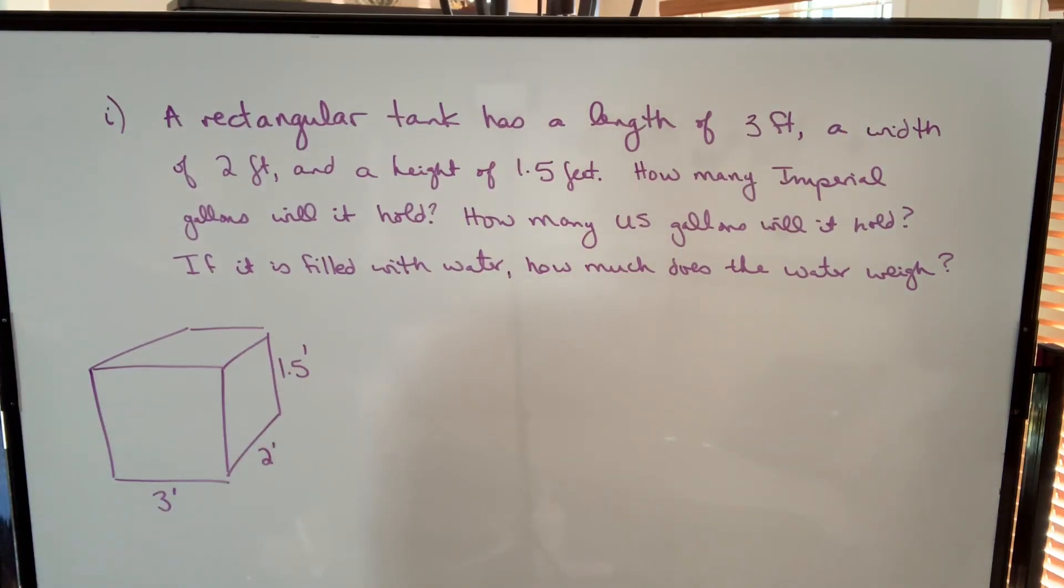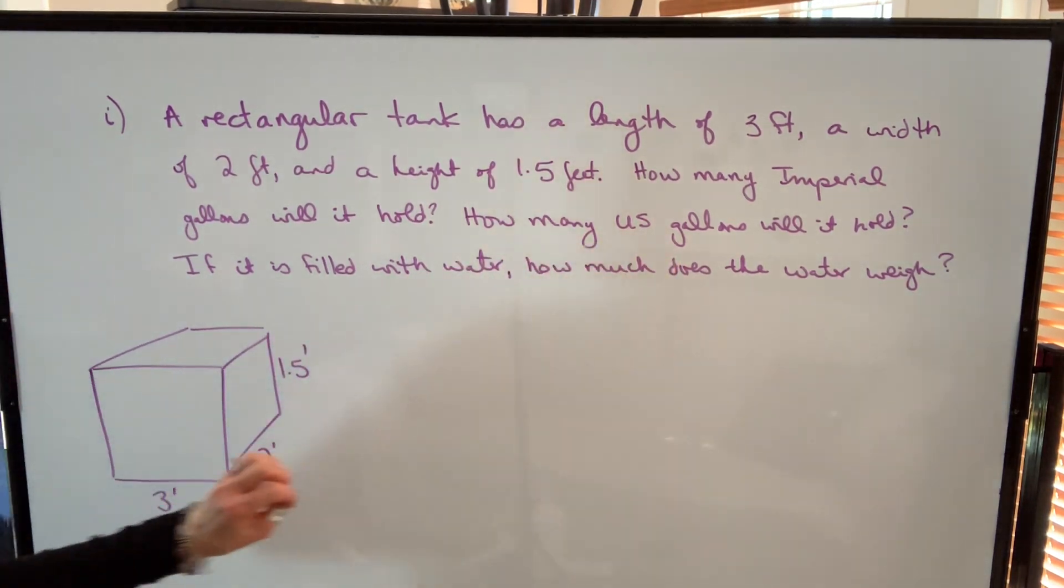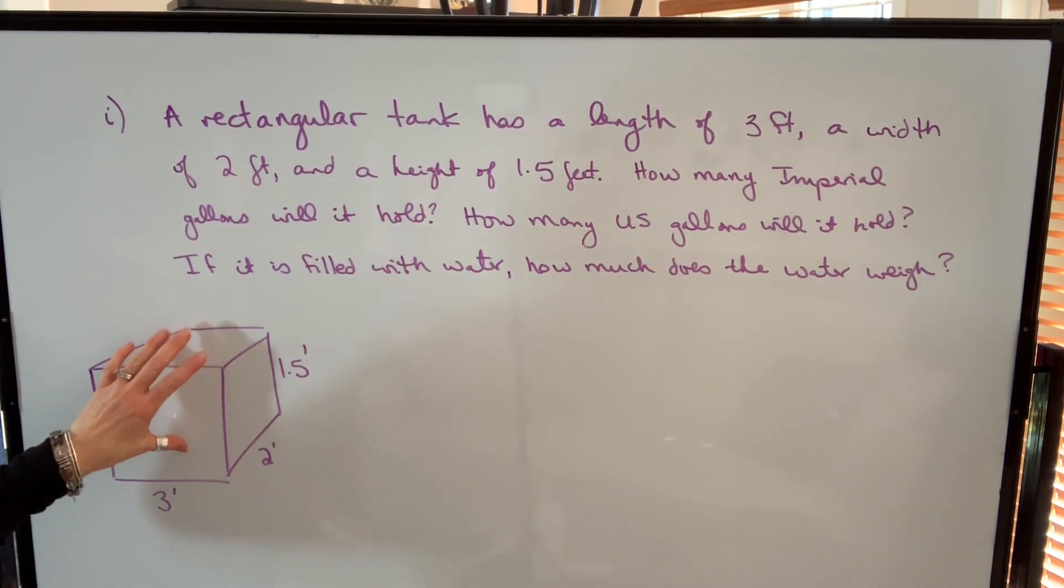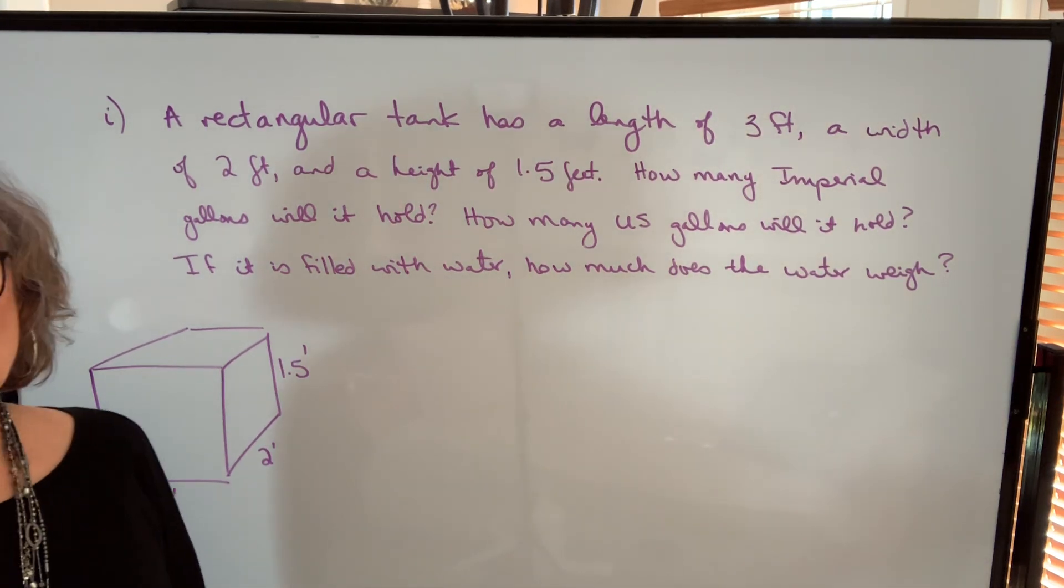Our first example says a rectangular tank has a length of 3 feet, a width of 2 feet, and a height of 1.5 feet. How many Imperial gallons will this container hold? How many US gallons will it hold? And if it's filled with water, what's the weight of that water?